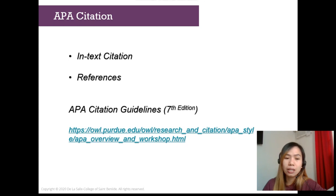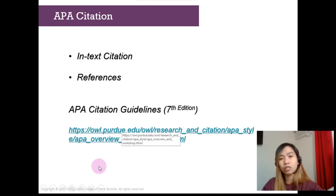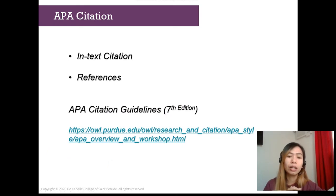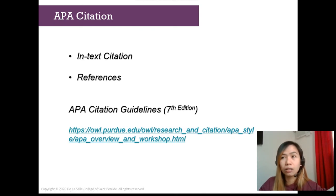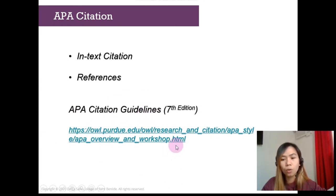Lastly, we have APA citation. There are citation guidelines available online that you can check as a ready reference. A very credible resource is onlinewriting.purdue.edu — you can click on it and be navigated to their site. This is also indicated in your assessment task for the module. Please study this; it is very important. I hope you learned something from this video. I shall see everyone in the synchronous sessions. Bye-bye.